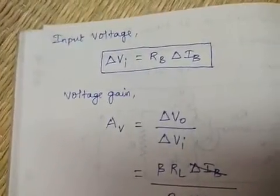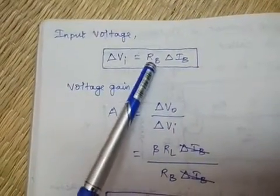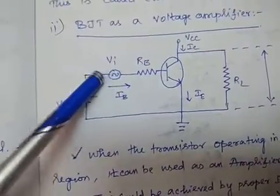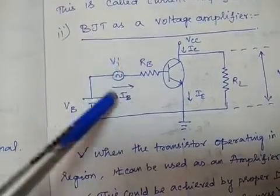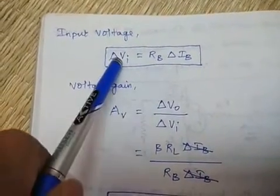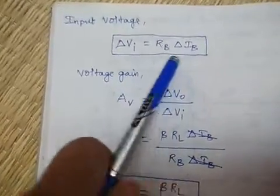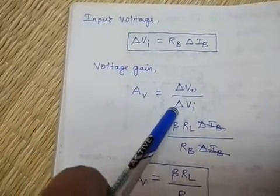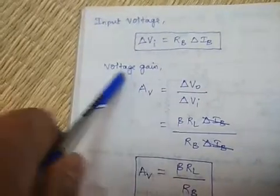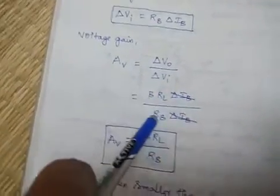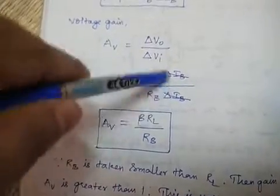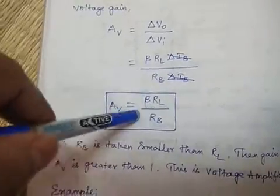Looking at the input voltage in the figure: Vin equals Ib times Rb, so delta-Vin equals Rb times delta-Ib. Voltage gain equals output voltage divided by input voltage. Substituting the values, delta-Ib cancels from both numerator and denominator, giving voltage gain Av equals beta times RL divided by Rb.